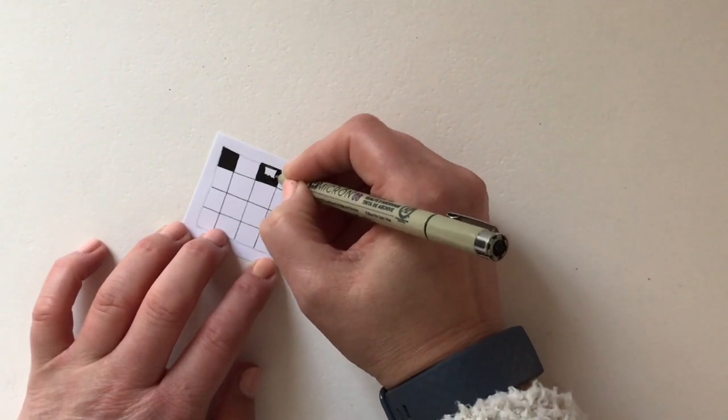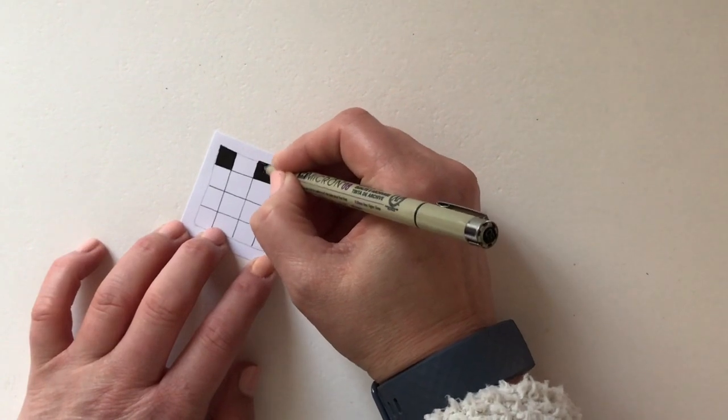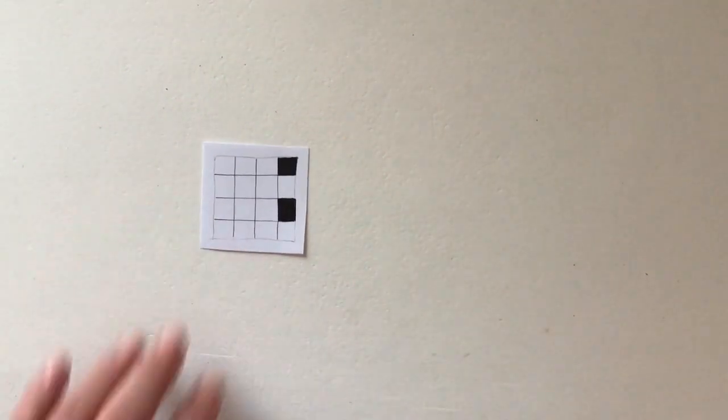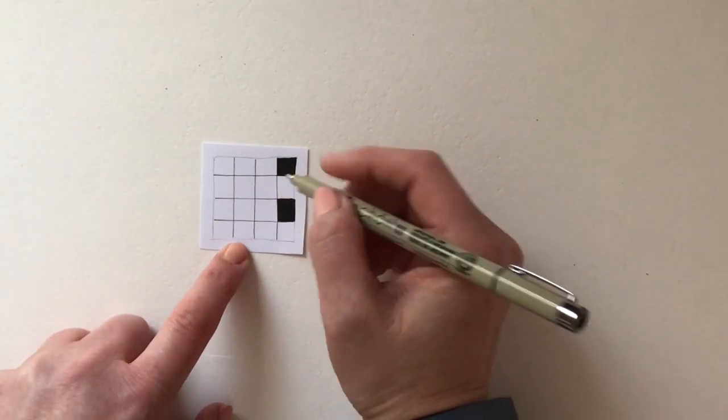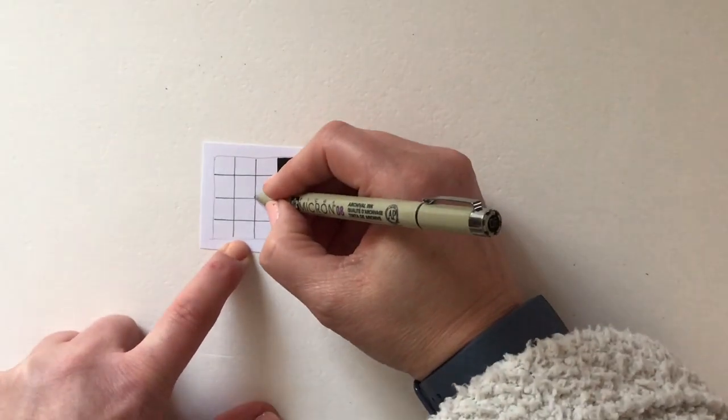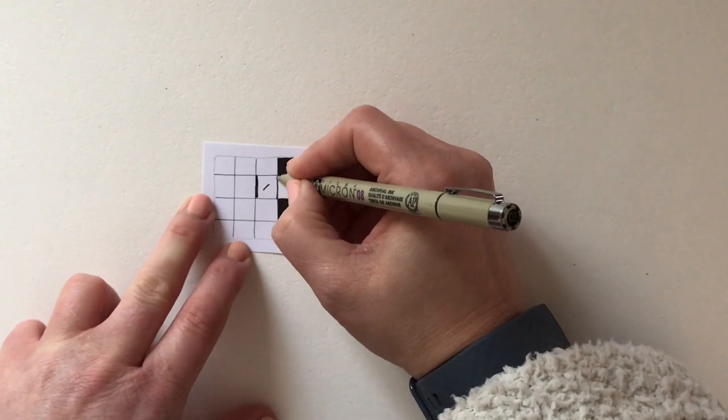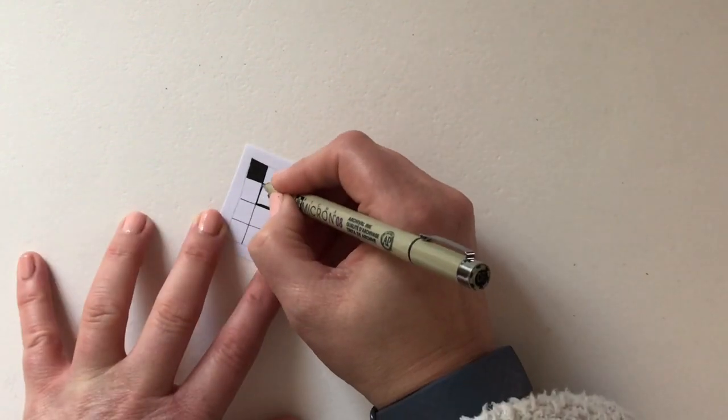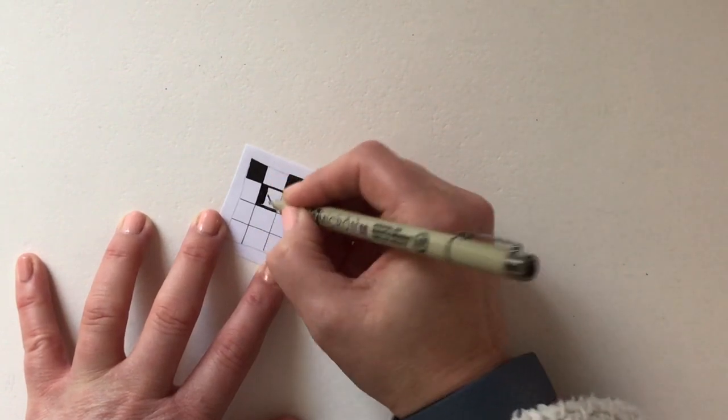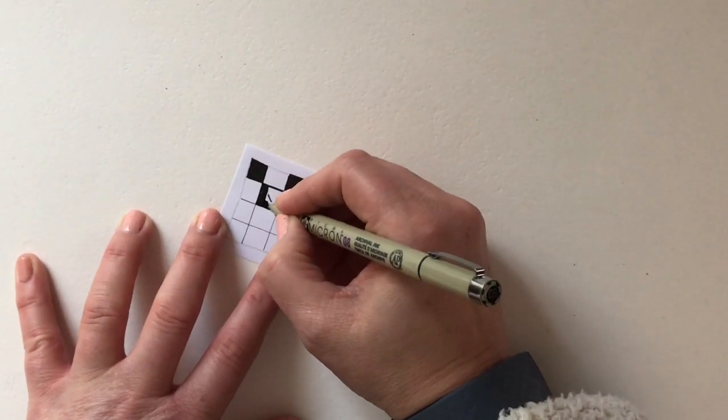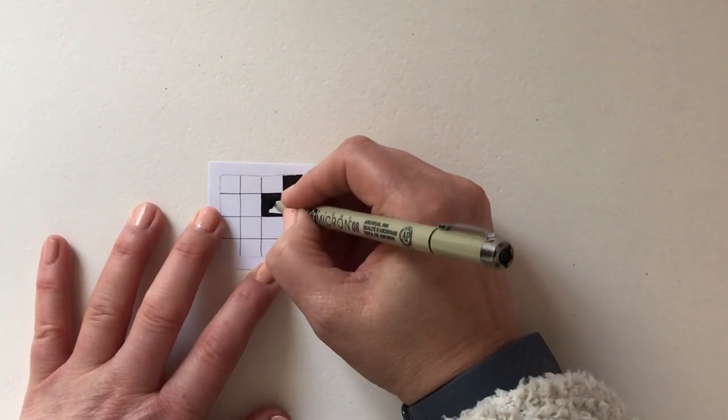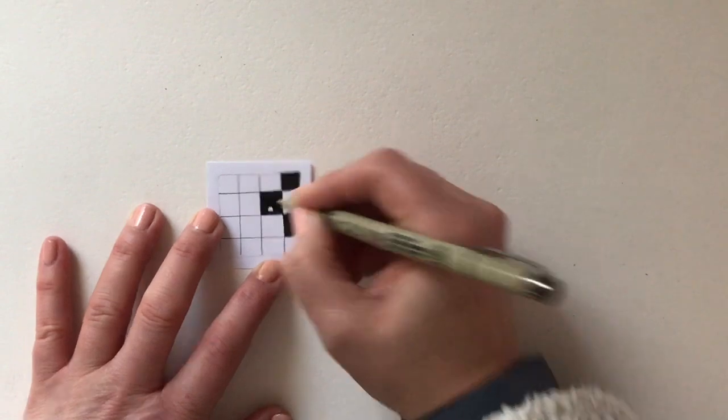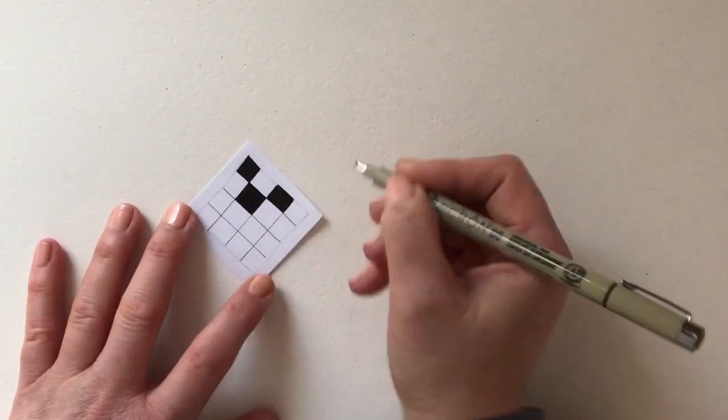You'll notice that as I'm coloring, I'm turning the tile around so it's comfortable for me. Now we're going to move to the next row down and I'm going to miss the one that's directly next to it and color that one in. I'm going much quicker than I would normally do on this, you can take the time and slow down as much as you want to.